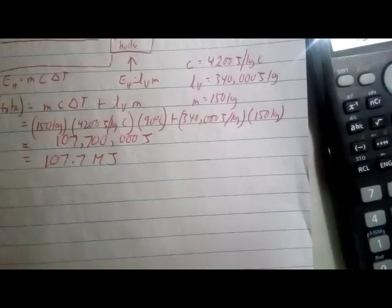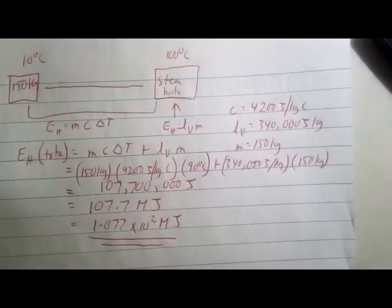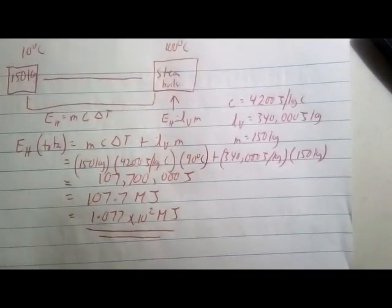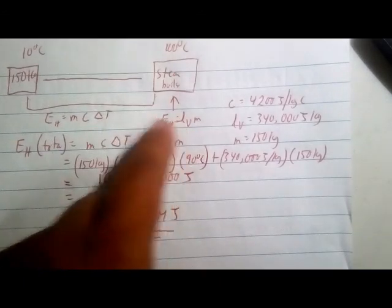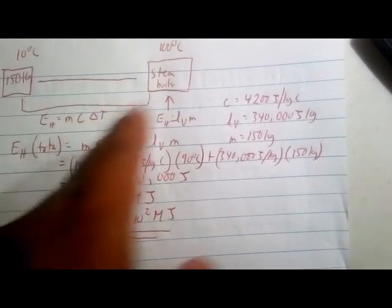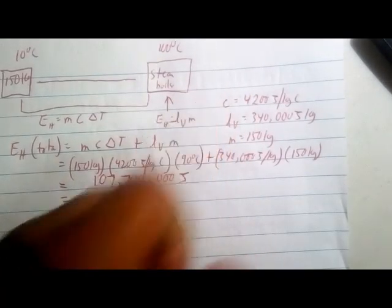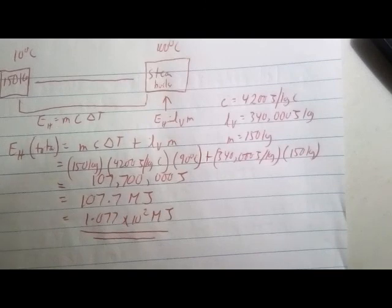This is how you combine the equations: use mcΔT for a change in temperature, and Lv × m for a change in state. You can have a temperature change before melting, and a temperature change after boiling — meaning the vapor continues to gain heat, causing molecules to vibrate even faster, requiring yet more energy.